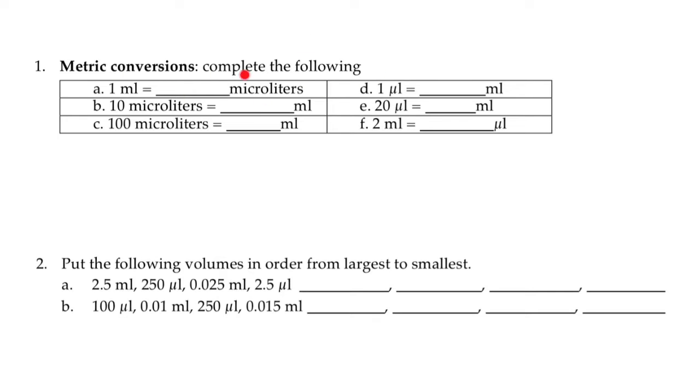So one milliliter equals 1000 microliters. 10 microliters is going to be 0.010 milliliters. And 100 microliters is going to be 0.1 milliliter.